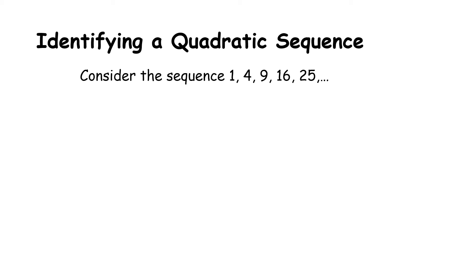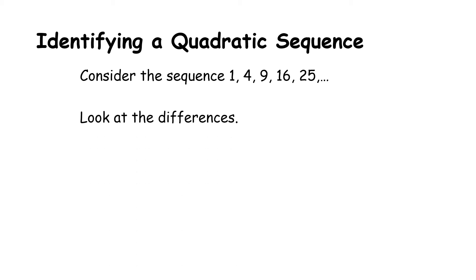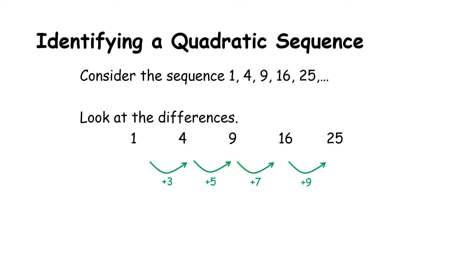So let's consider this sequence: 1, 4, 9, 16, 25. As you would have learned in the previous video, we will always look at the differences. When we create our first differences it will look like this: we add 3, we add 5, we add 7, we add 9.